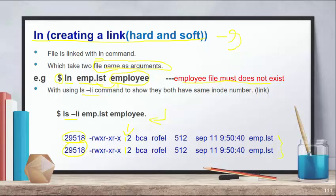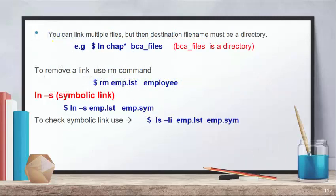Both files — emp.lst and employee — have the same inode number, confirming the hard link. Also notice the link count: previously it showed 1, but now both files show 2 in the link column. This confirms the link was created using the ln command.